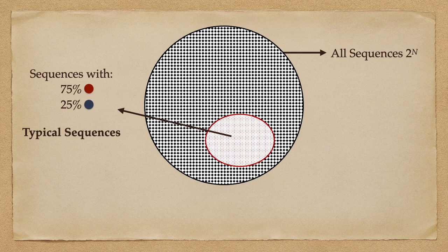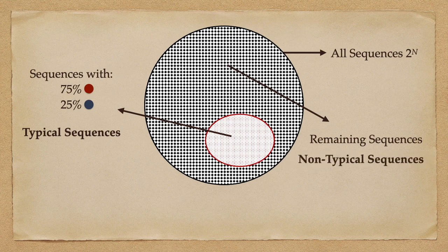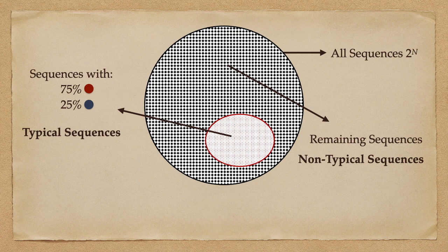These are referred to as typical sequences. The remaining sequences that have different compositions are denoted non-typical sequences. The sequences produced by an information source can be classified into typical and non-typical sequences.